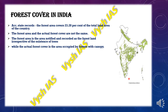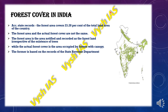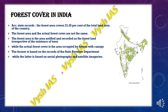The canopy is like the cap or hat of a tree. When we see from the aerial view or from the sky, this forest cover looks like it is very much expanded and spread all across. But when we go beneath the canopy layer, we can see the actual forest area. The forest area is based on the records of the state revenue department, whereas the actual forest cover is based on aerial photographs and satellite images.